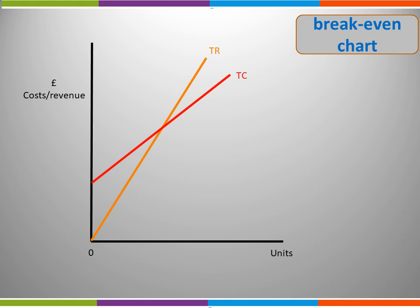We can also use a breakeven chart — a graphical representation of the costs and revenues of a business, allowing it to identify the breakeven level of output. Remember, the breakeven point is where total cost equals total revenue, so on the graph it is the point where those two lines cross. From there we draw a line down to the horizontal axis to identify the breakeven level of output.